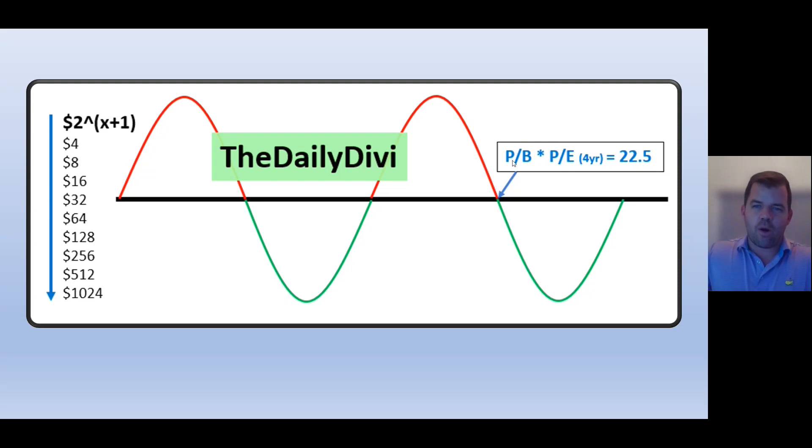And so the way the theory holds is for price to book, if the price is the same as the book value, which basically after you pay all the liabilities, that asset is worth the same as the price of the stock, then hey, I'm okay with this company taking 22 and a half years to pay me back.